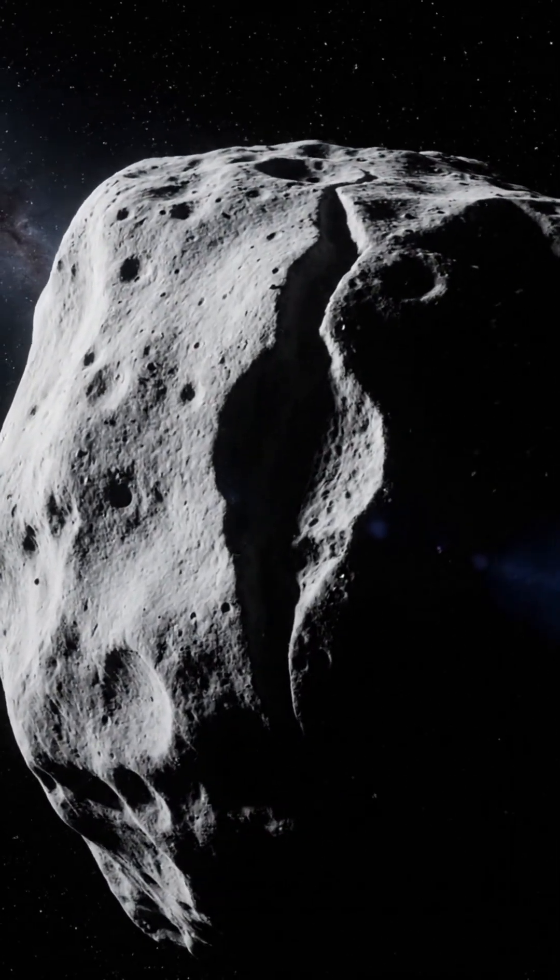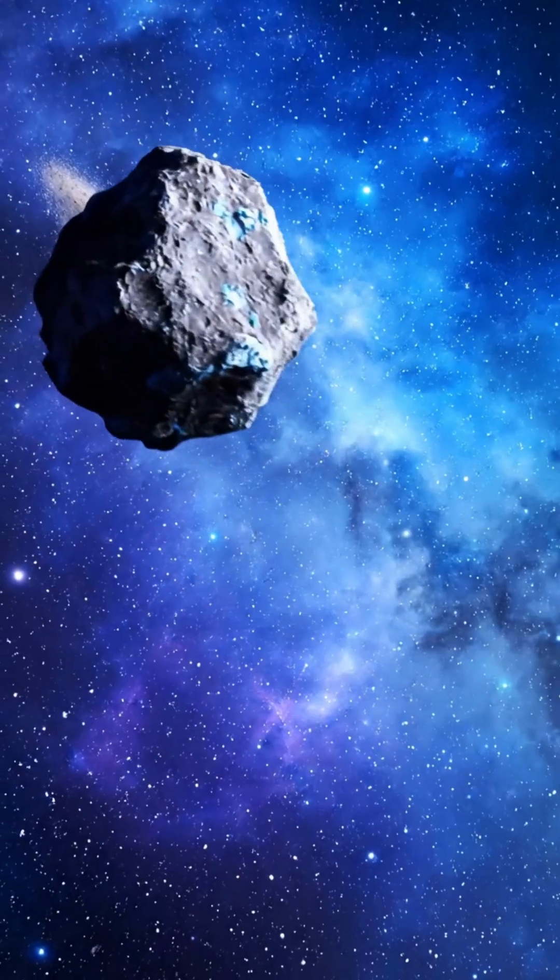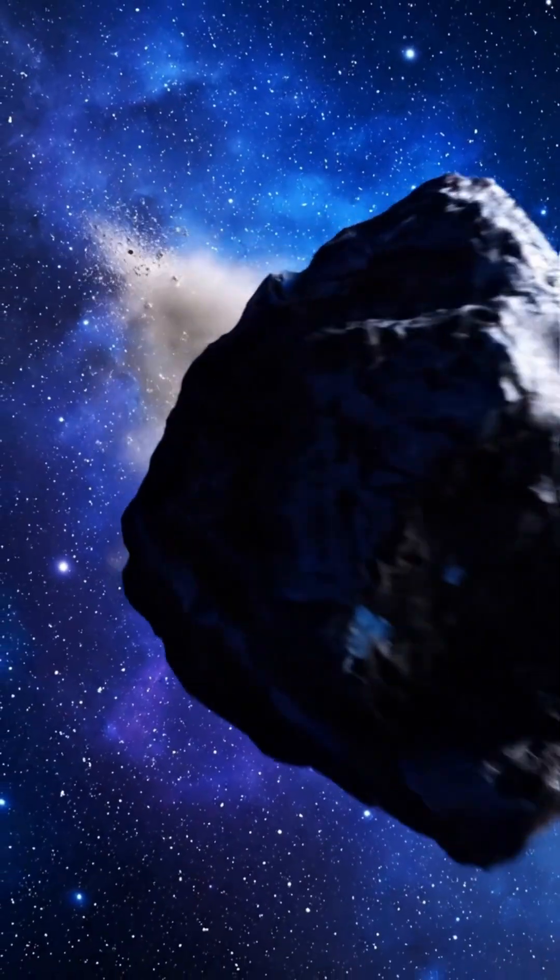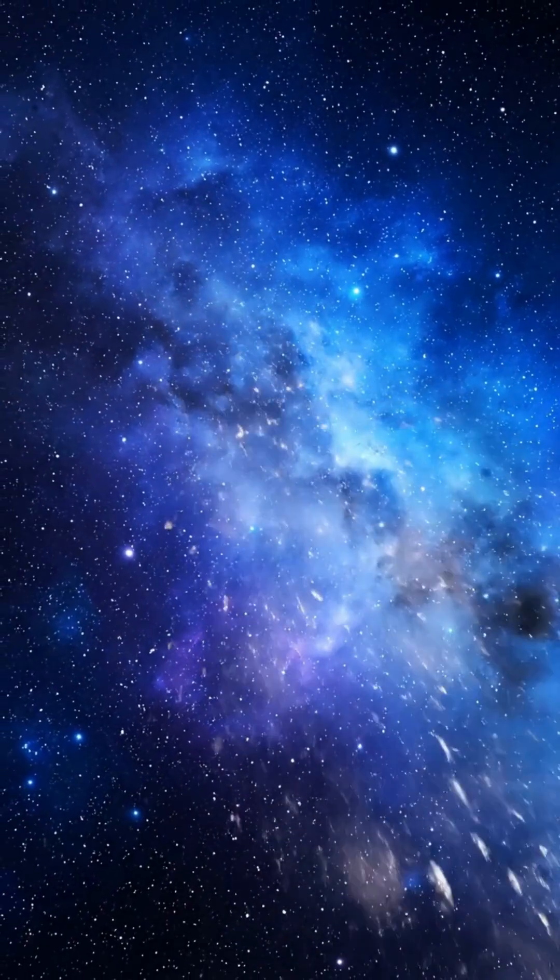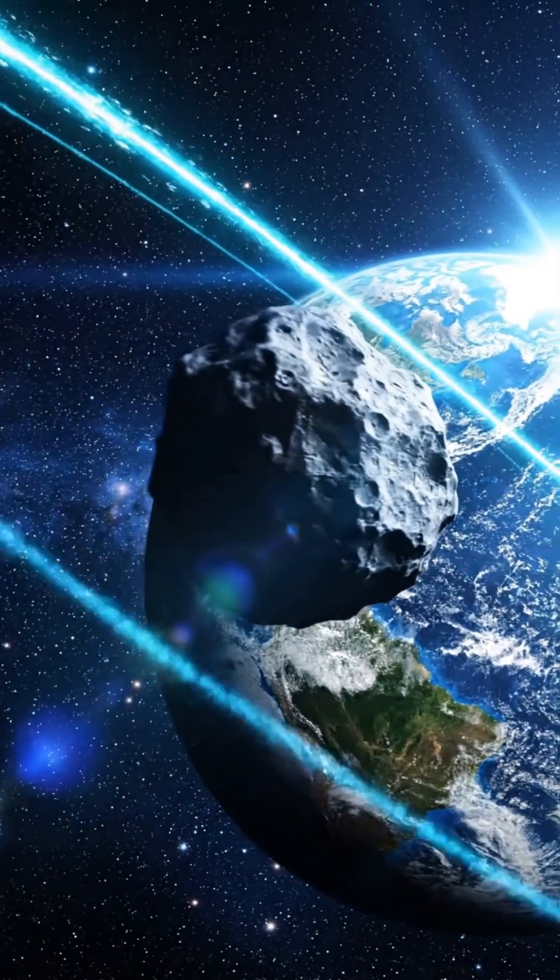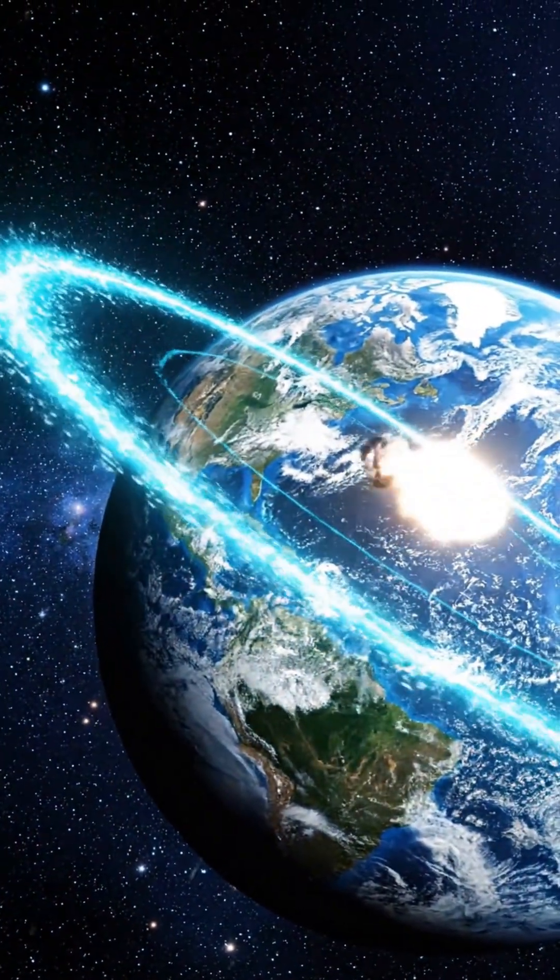Most people imagine asteroids slowly drifting, floating gently through space. But the truth is far more extreme. Typical asteroids travel at incredible speeds, around 20 kilometers per second. That's nearly 72,000 kilometers per hour, fast enough to circle Earth almost twice in one minute.